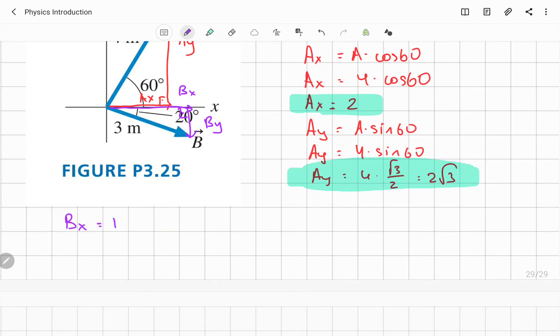Bx equal to B times cosine 20, which is 3 times cosine 20, and it will be equal to approximately 2.82. Y component will be negative because of direction downward. So B times sine 20, minus 3 times sine 20, and the By will be equal to negative 1.02.